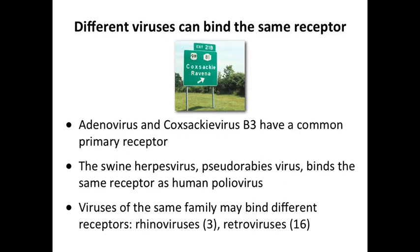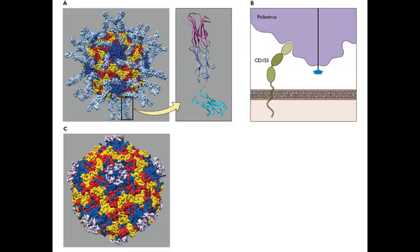A swine herpes virus called pseudorabies virus happens to bind the same receptor as poliovirus — two totally different viruses, one enveloped and one not, yet they share a receptor. Conversely, viruses of the same family may bind different receptors: rhinoviruses have at least three different receptors, and retroviruses have at least 16. The point is there is remarkable diversity in virus-receptor interactions.